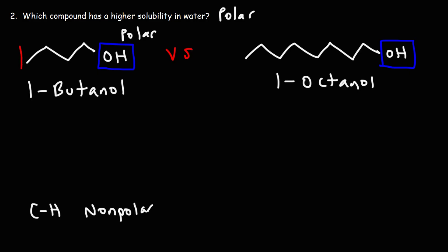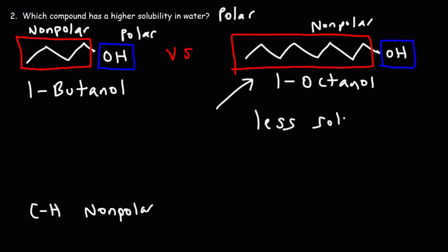So here, we have four carbons that make up the non-polar tail of this molecule. But for the other one, we have a total of eight carbon atoms that makes up the non-polar tail. So because this molecule here has such a big non-polar tail, it's going to be less soluble in water. This one, the non-polar tail is smaller, so it's going to have a higher solubility in water.